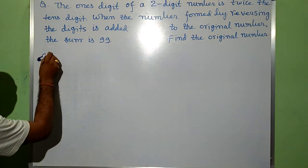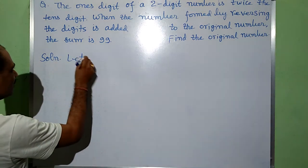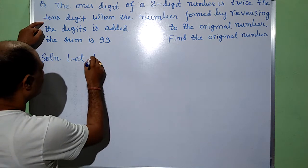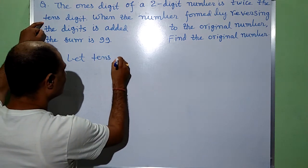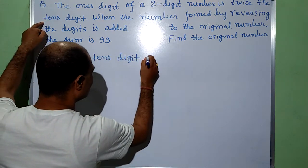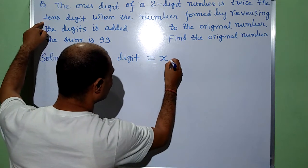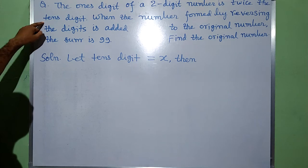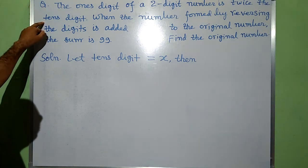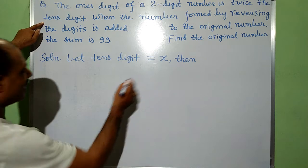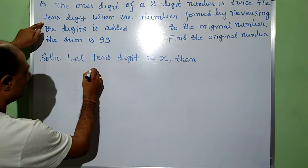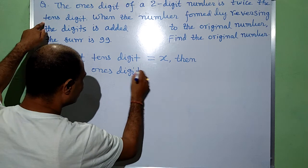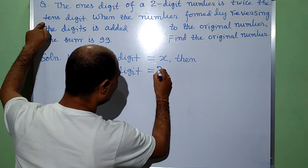Solution. Let the 10's digit be equal to x. Then, since the 1's digit of the 2-digit number is twice the 10's digit, the 1's digit will be equal to 2x.